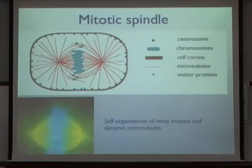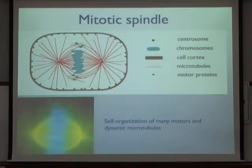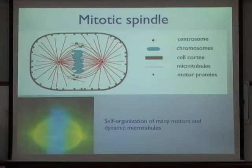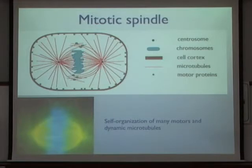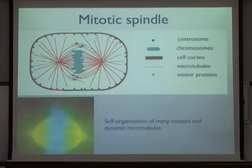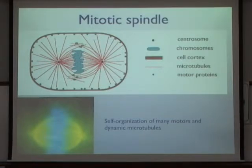The third highly organized cytoskeletal structure to discuss in more detail is the mitotic spindle, which is responsible for physically separating duplicated chromosomes during cell division. It is organized by two asters — in the center there are two centrosomes from which microtubules polymerize and radiate out. This structure is dynamically self-organized by molecular interactions, including interactions between microtubules and the cell cortex (an actin layer near the cell membrane), between microtubules and chromosomes, between microtubules with each other, and motor proteins play an important role in this self-organization.